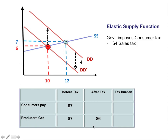After taxes, the new equilibrium price is six dollars, so producers receive six dollars. Consumers pay the new equilibrium price of six dollars plus the sales tax of four dollars they pay to the government, adding up to ten dollars. The tax burden is three dollars extra paid by consumers and one dollar less received by producers — three plus one equals four dollars total.